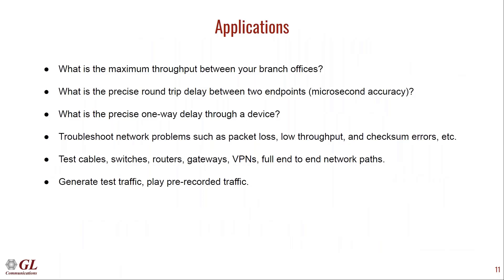Here are just a few applications: maybe you want to know the maximum throughput between two branch offices, or the precise round-trip delay between two endpoints — PacketCheck can give you microsecond accuracy. It can do round-trip delay or one-way delay. You can use PacketCheck to troubleshoot network problems like packet loss, low throughput, and errors. You can test a variety of equipment: cables, switches, routers, gateways, VPNs, and full end-to-end network paths.